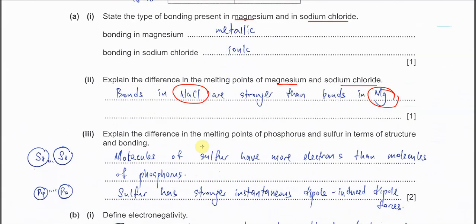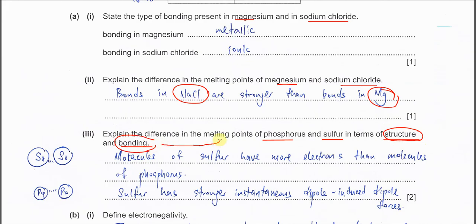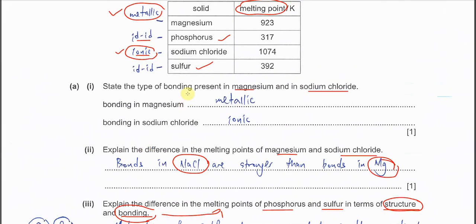Part three asks us to explain the difference in melting point of phosphorus and sulfur in terms of structure and bonding. You have to understand what the question wants: you must mention the structure — whether it is simple or giant molecular — and the bonding they have, in relation to the melting points.